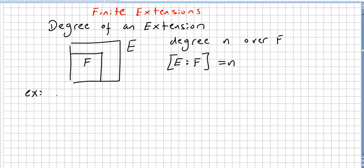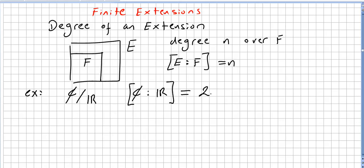For example, consider the complex numbers over the reals. The field of complex numbers has degree 2 over the reals, because the basis for this is {1, i}. The field of complex numbers is also an infinite extension of the rationals, but we will get to that later.